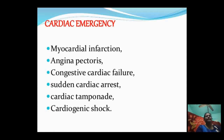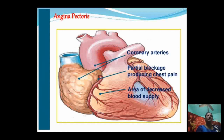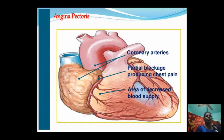Angina pectoris is a chest discomfort or shortness of breath caused when the heart muscles receive insufficient oxygen-rich blood. When there is insufficient oxygen-rich blood supply, the patient may feel chest discomfort or shortness of breath.